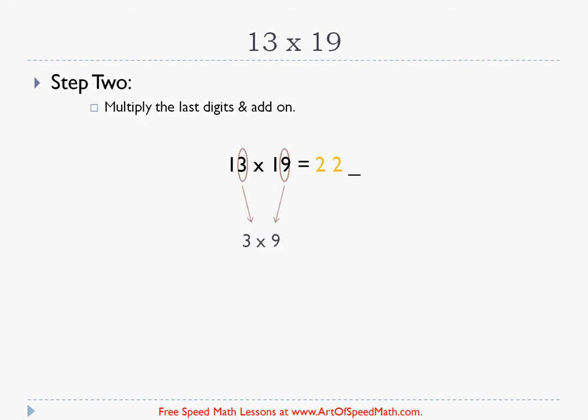You multiply the last digits and then you add them onto the answer. So we know that 3 times 9 which is the last digits in both these numbers, 3 times 9 is 27. Now all we're going to do is add 27 onto the problem. See there? 27 is literally laid on top.